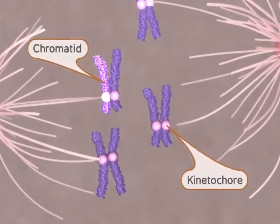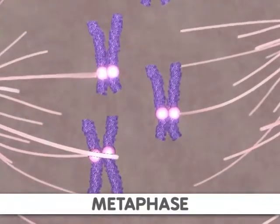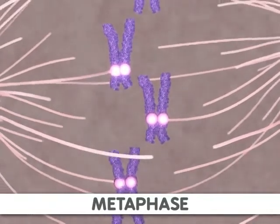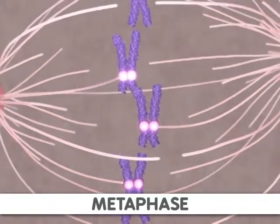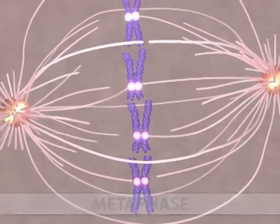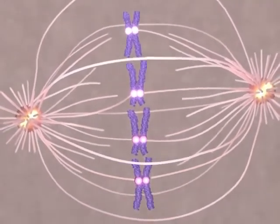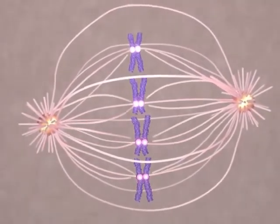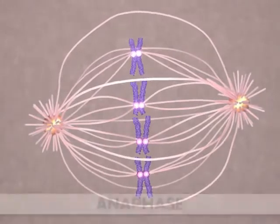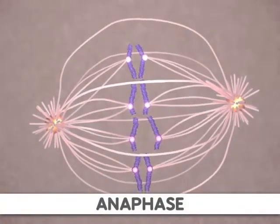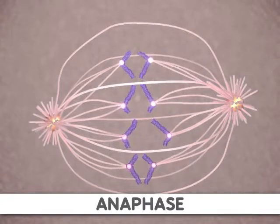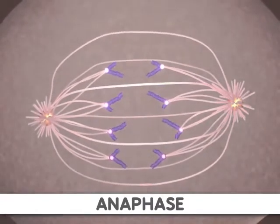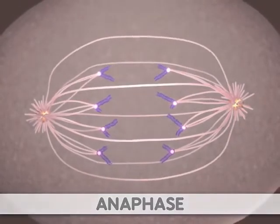Next comes metaphase. During this stage, the sister chromatids align along the center of the cell so that both chromatids face toward opposite poles of the cell. Now the sister chromatids are ready to be separated. This occurs during anaphase through a shortening of the microtubules attached to the kinetochores. Additionally, the poles of the cell move farther apart, causing increased separation of sister chromatids. At the end of anaphase, the sister chromatids have moved to the two ends of the cell.